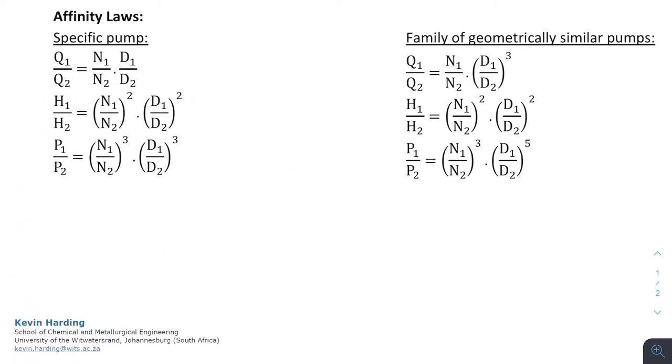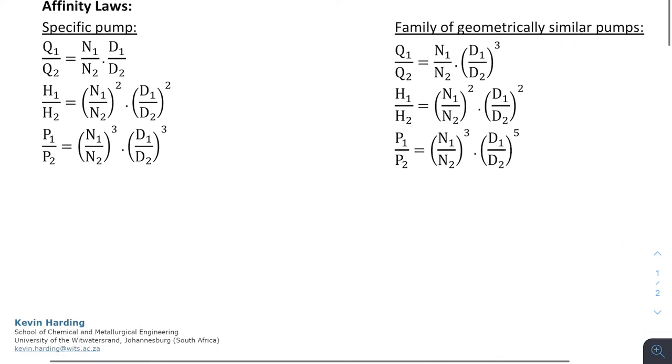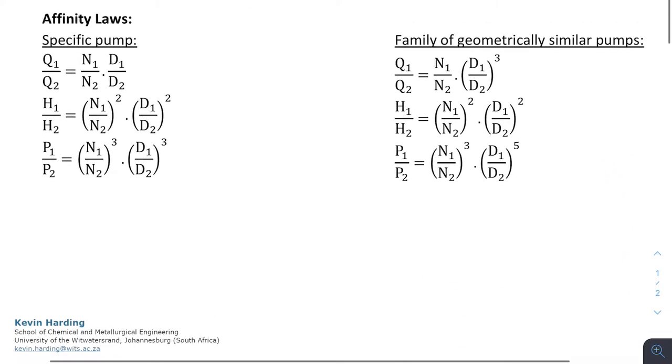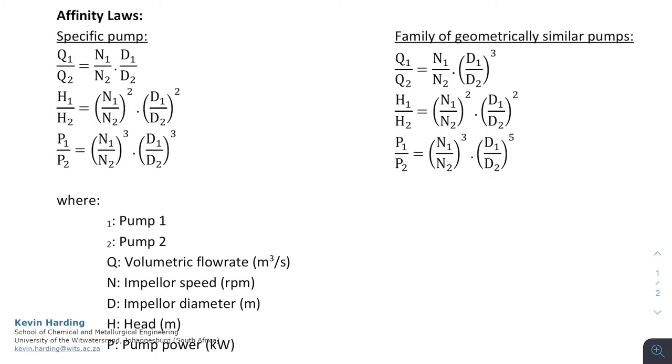In the same way, if we use that previous NS equation, we can find a similar set of equations for a family of geometrically similar pumps. So if the NS value is the same from one pump to another, we will have a second set of equations. This is for a specific pump or a family of pumps, and this is going to relate Q, H, and P.